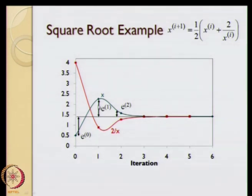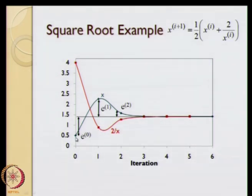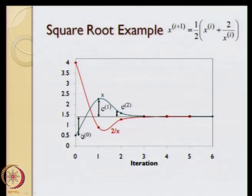The value E1 is essentially this particular difference. E2 is essentially this difference, E3 is this, E4 is this, and so on and so forth. The absolute error is the difference between the true value and the approximate value, and the relative error is this difference divided by the true value of the solution.